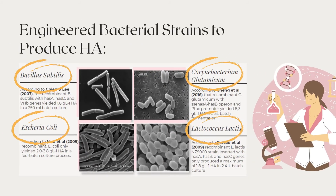Currently, there are four microbes that have been successfully engineered to produce hyaluronic acid. These examples include B. subtilis, C. glutamicum, E. coli, and L. lactis.